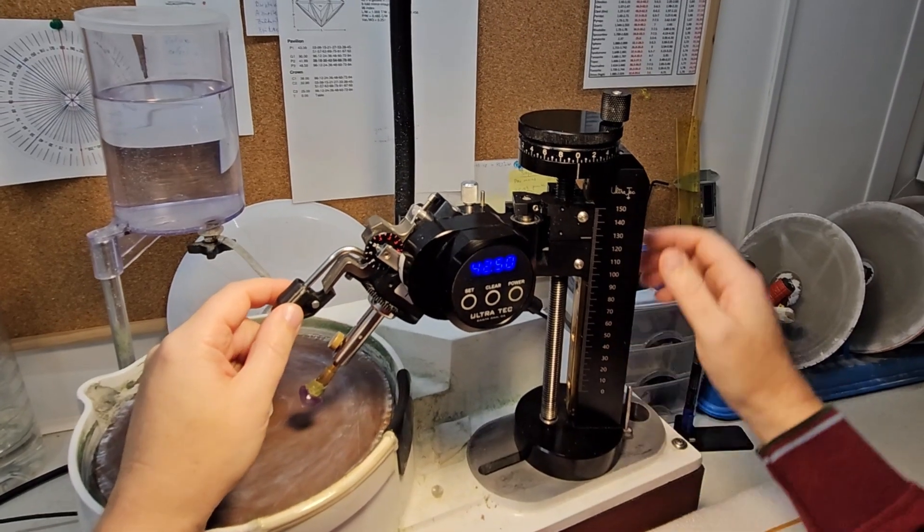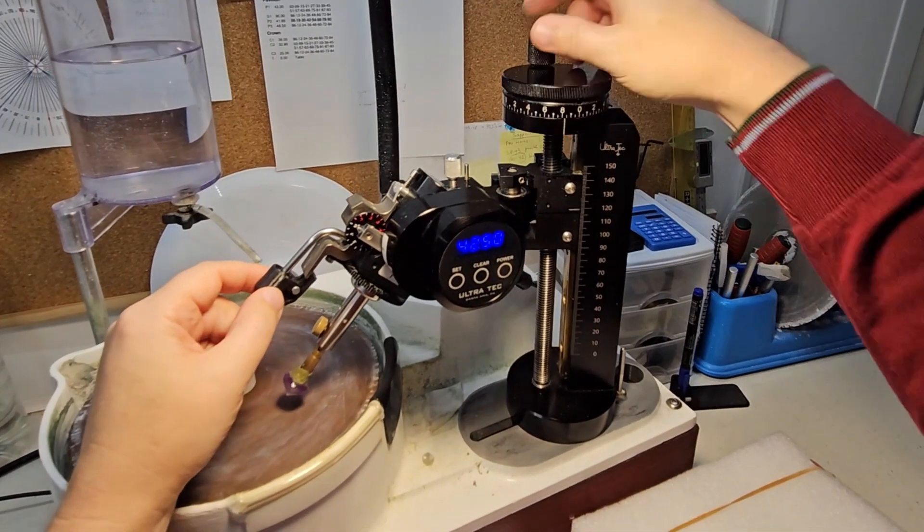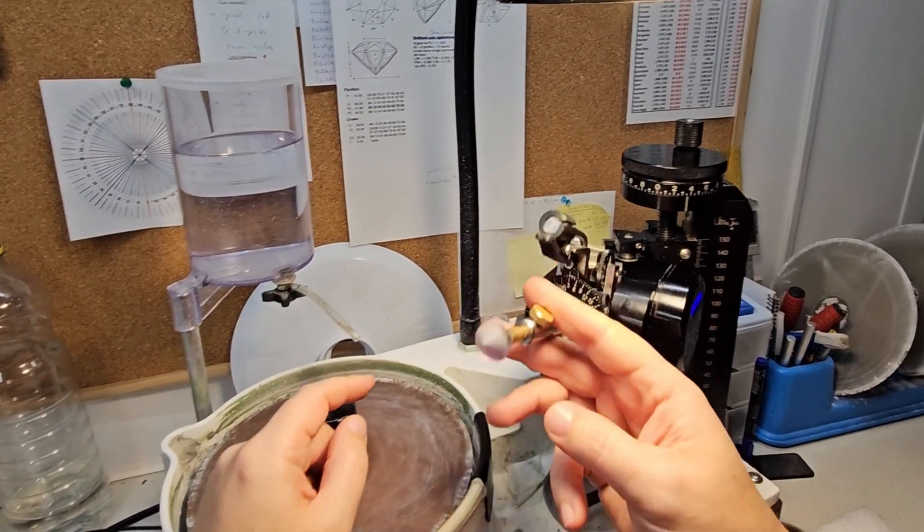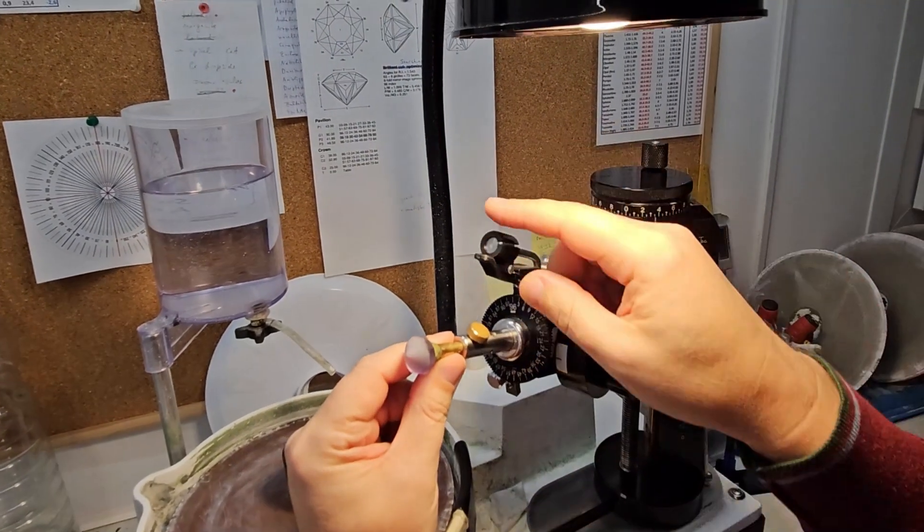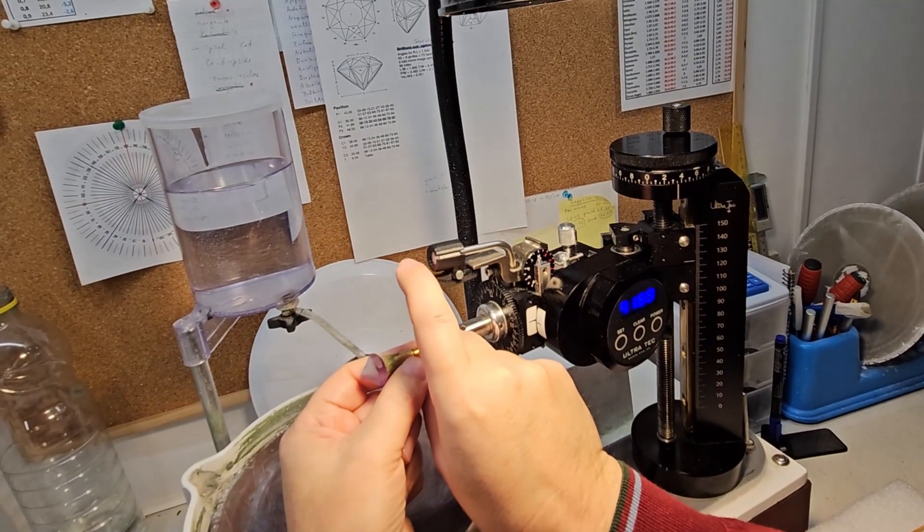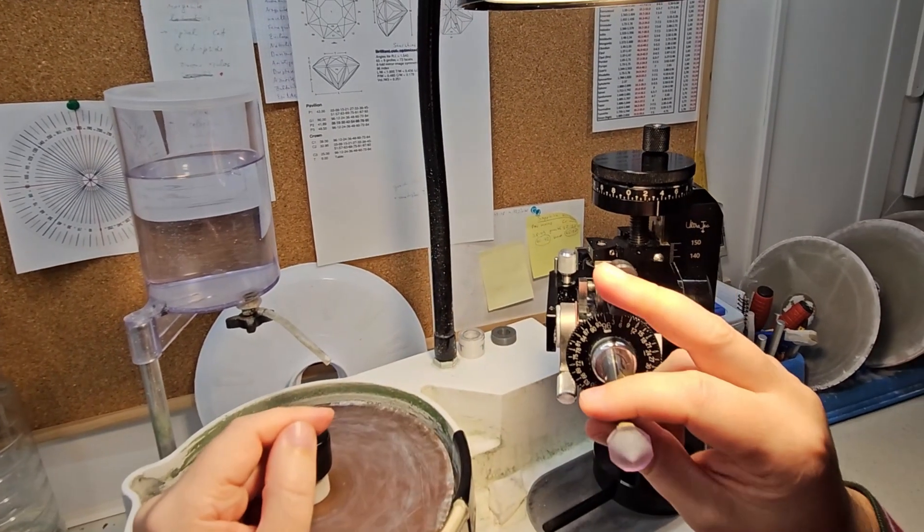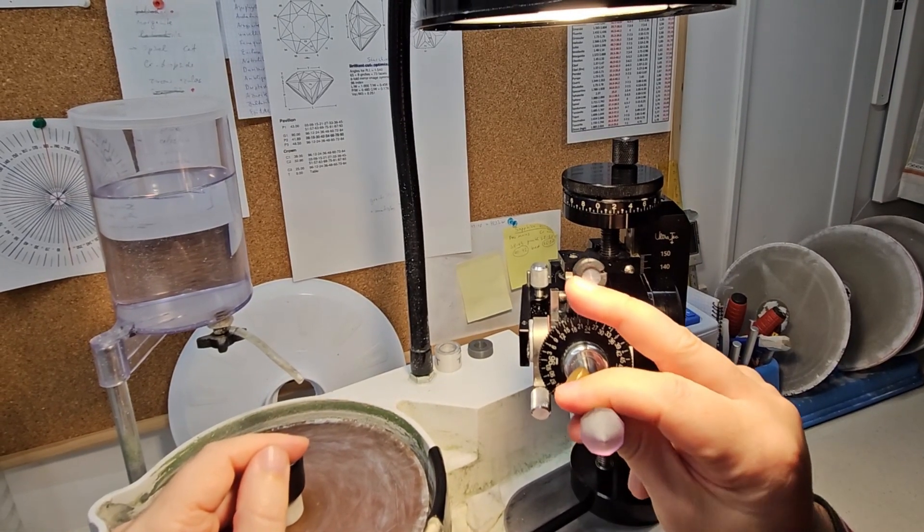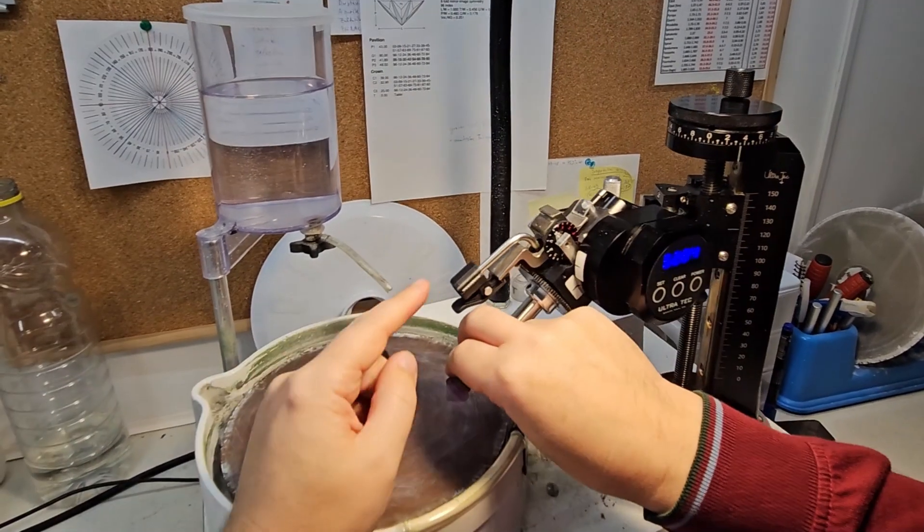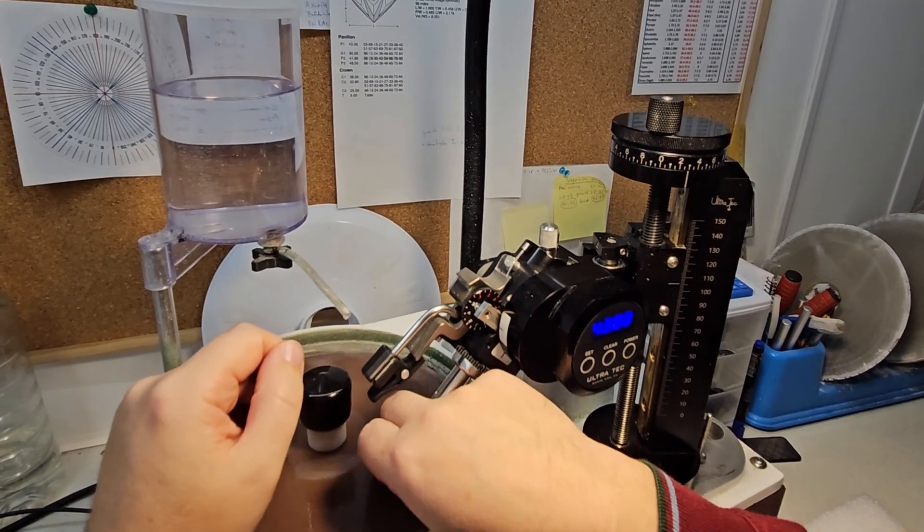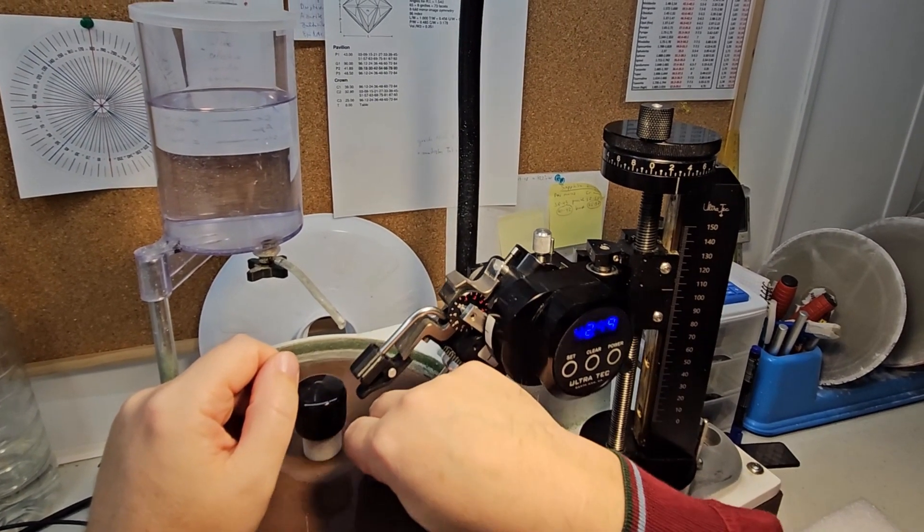So, what improvements have I made to my Ultratech V5 Mast? The most important one is this custom designed and 3D printed piece, which allows me to change index positions with the same hand while holding the stone. I prefer to hold the stone with my fingers while cutting. It lets me apply more pressure against the lap and maintain better control of the stone.